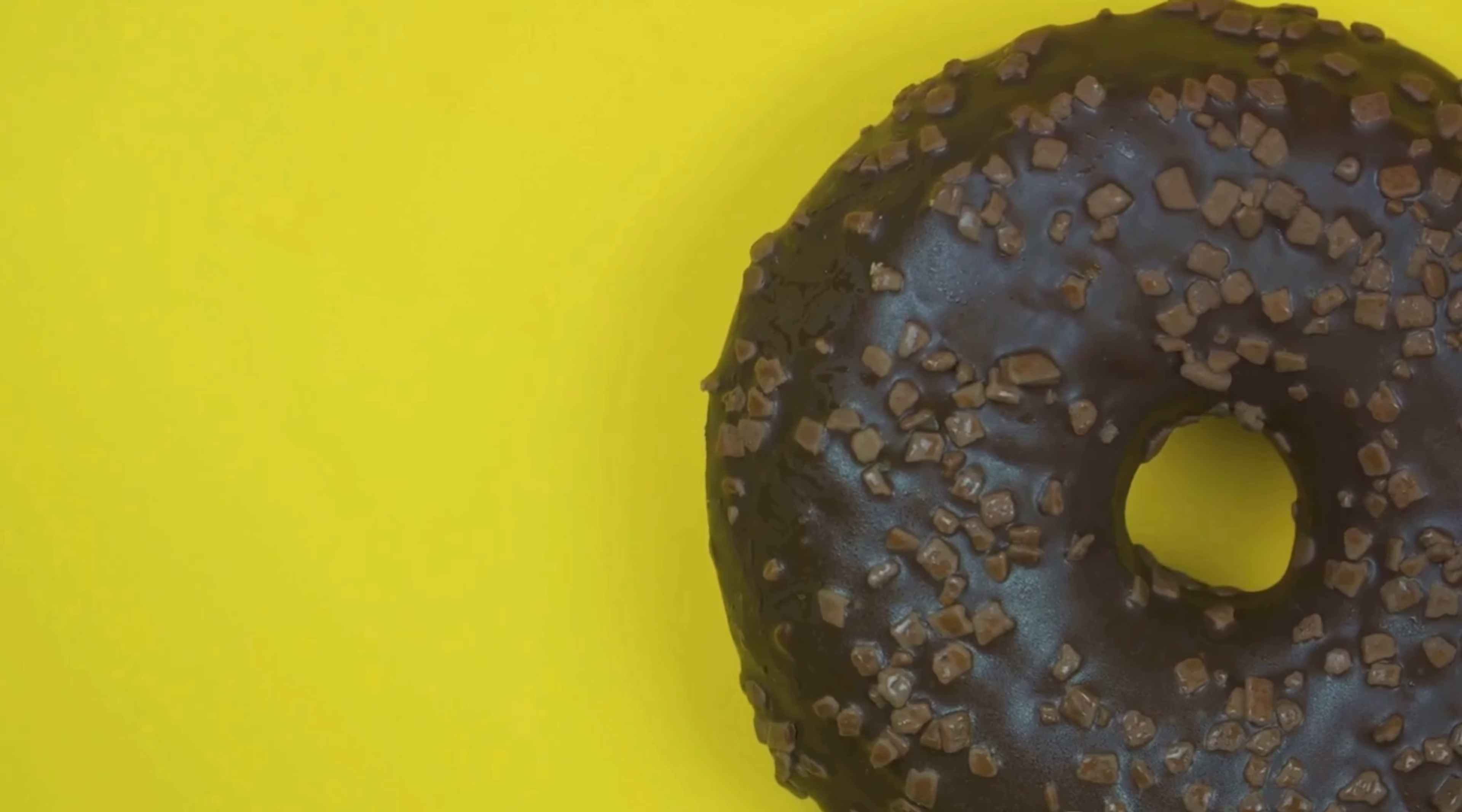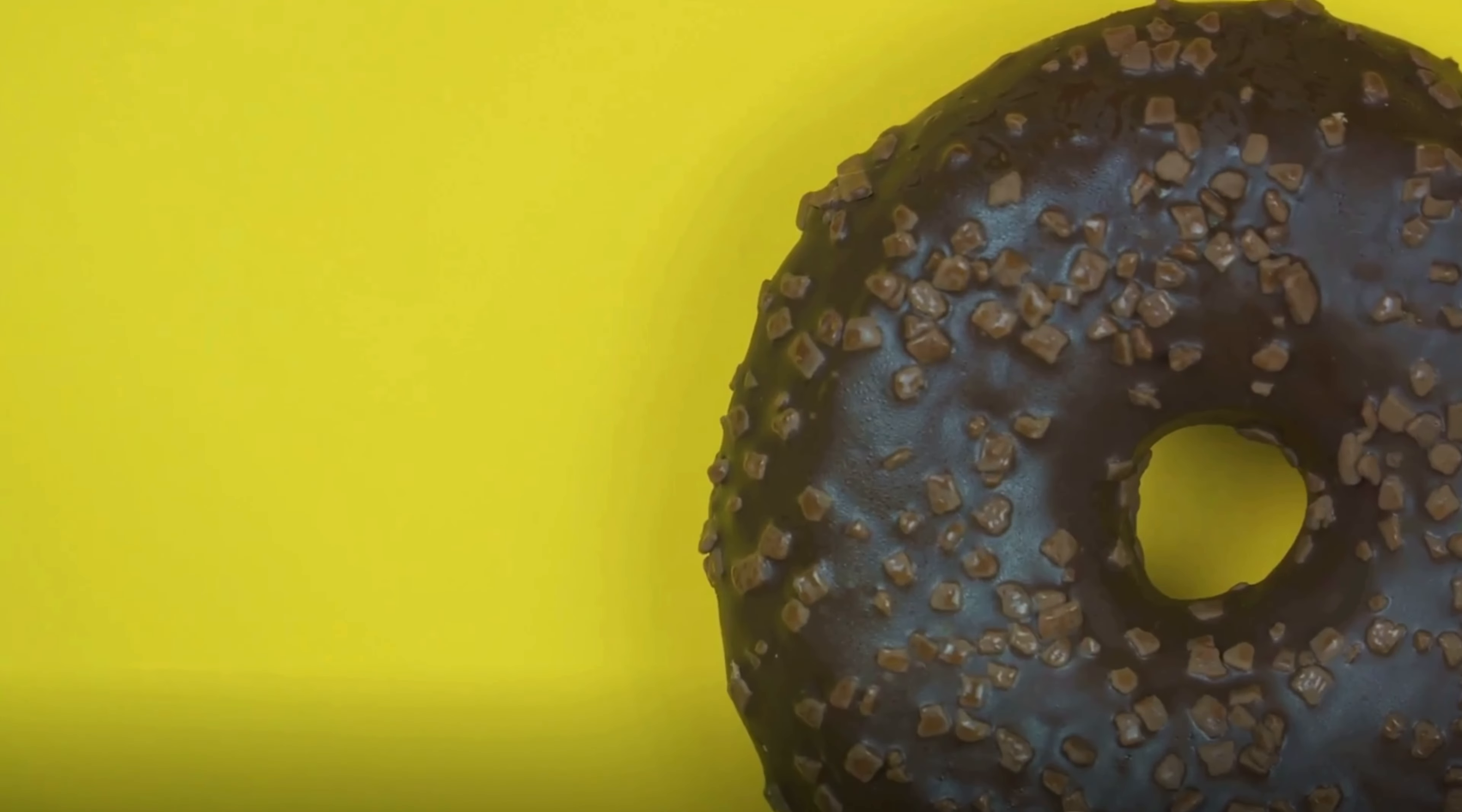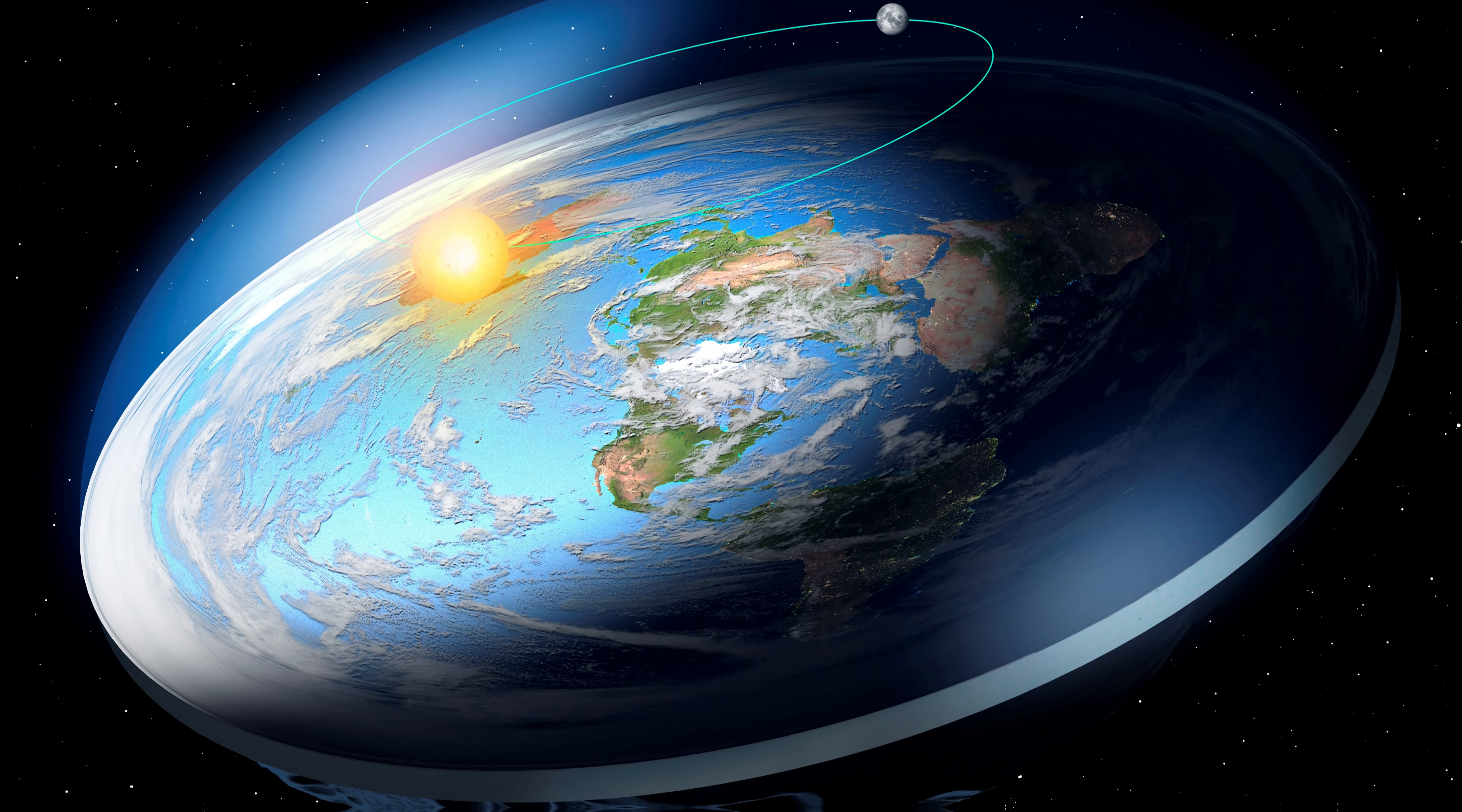And what about life as we know it? Life has evolved to survive under our planet's current gravity. A change in gravity could have drastic effects on all life forms, from the smallest microbes to the largest animals. Living on a donut-shaped Earth would be no piece of cake, with its unique weather patterns and gravity fluctuations. It's a fascinating thought experiment, though, and one that makes us appreciate the perfectly imperfect sphere we call home.